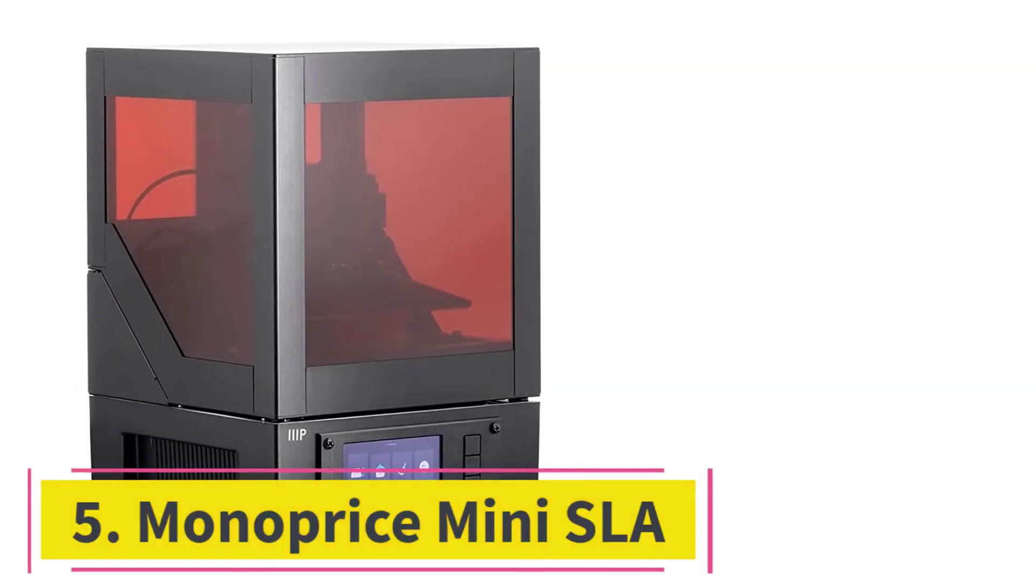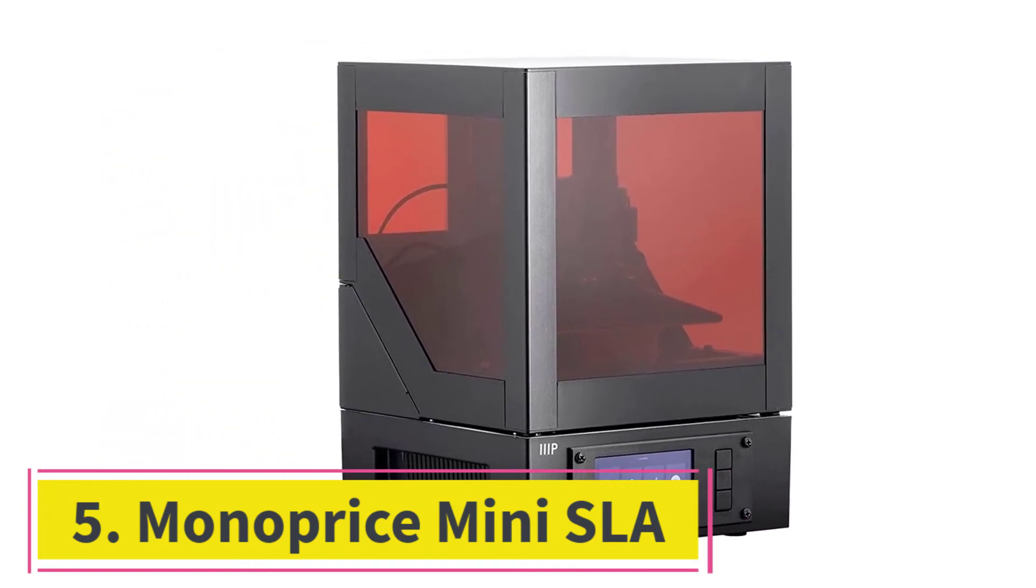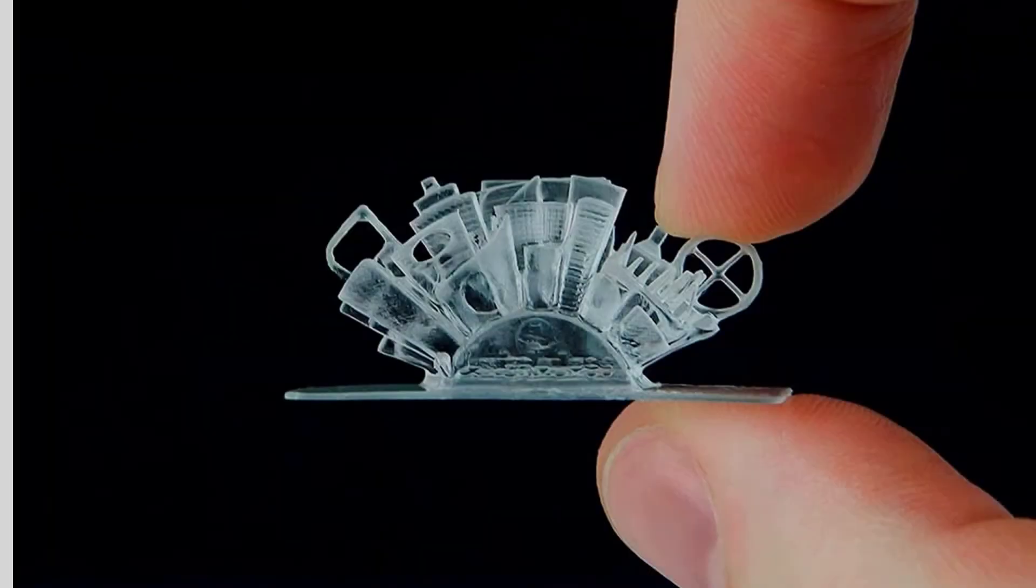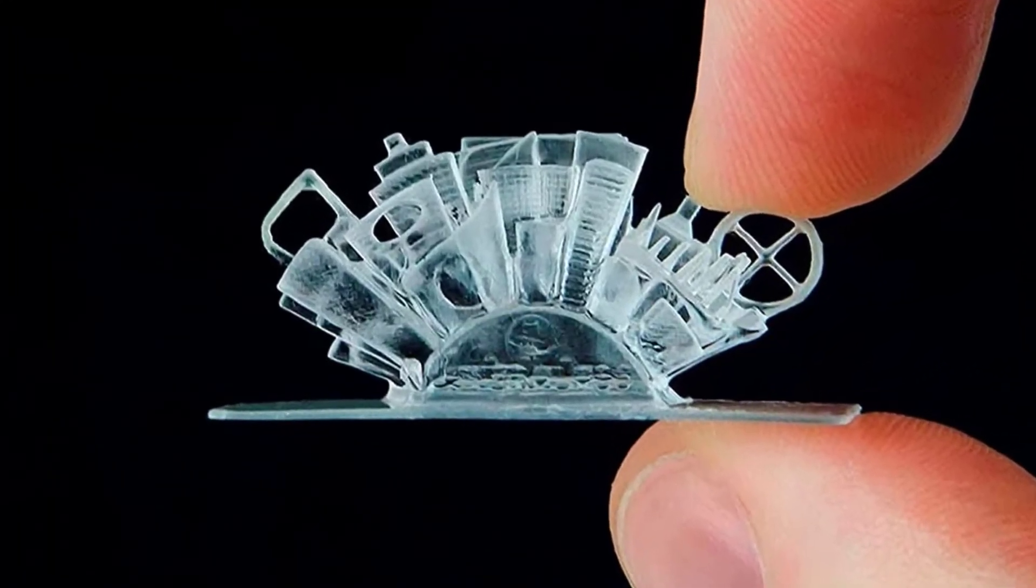At number 5, Monoprice Mini SLA. The bed and the Z-axis are connected with the ball joint which is placed tighter to prevent slipping during the leveling and printing process.